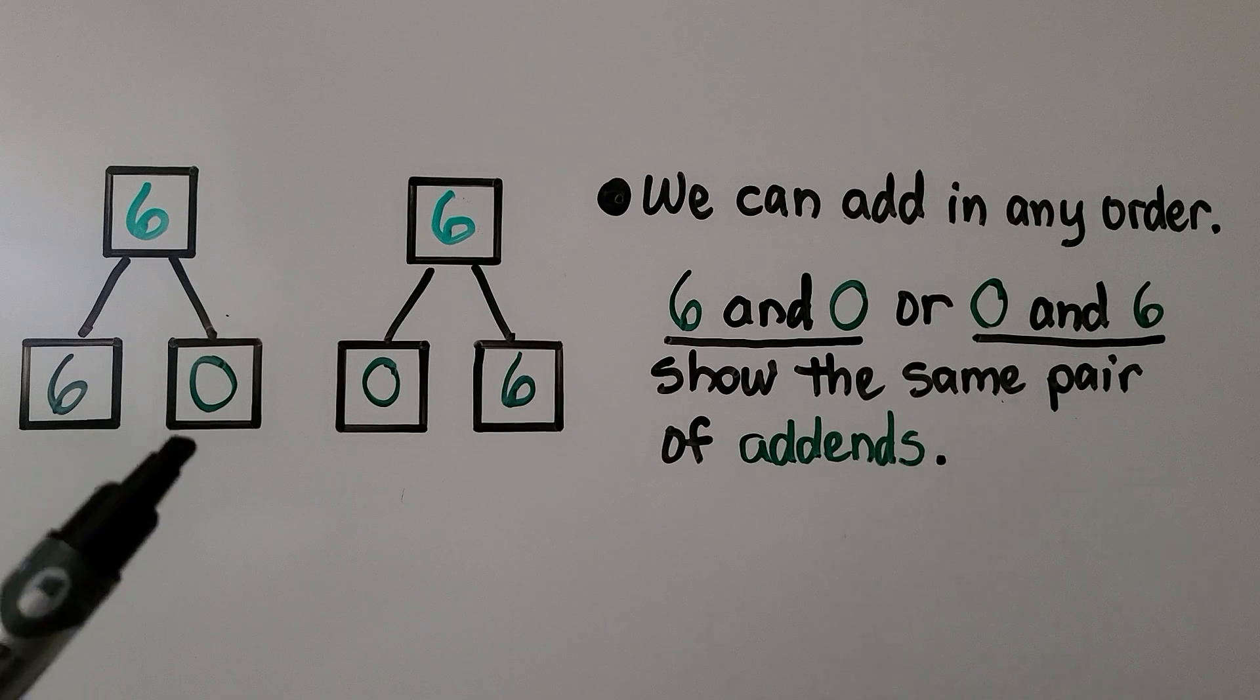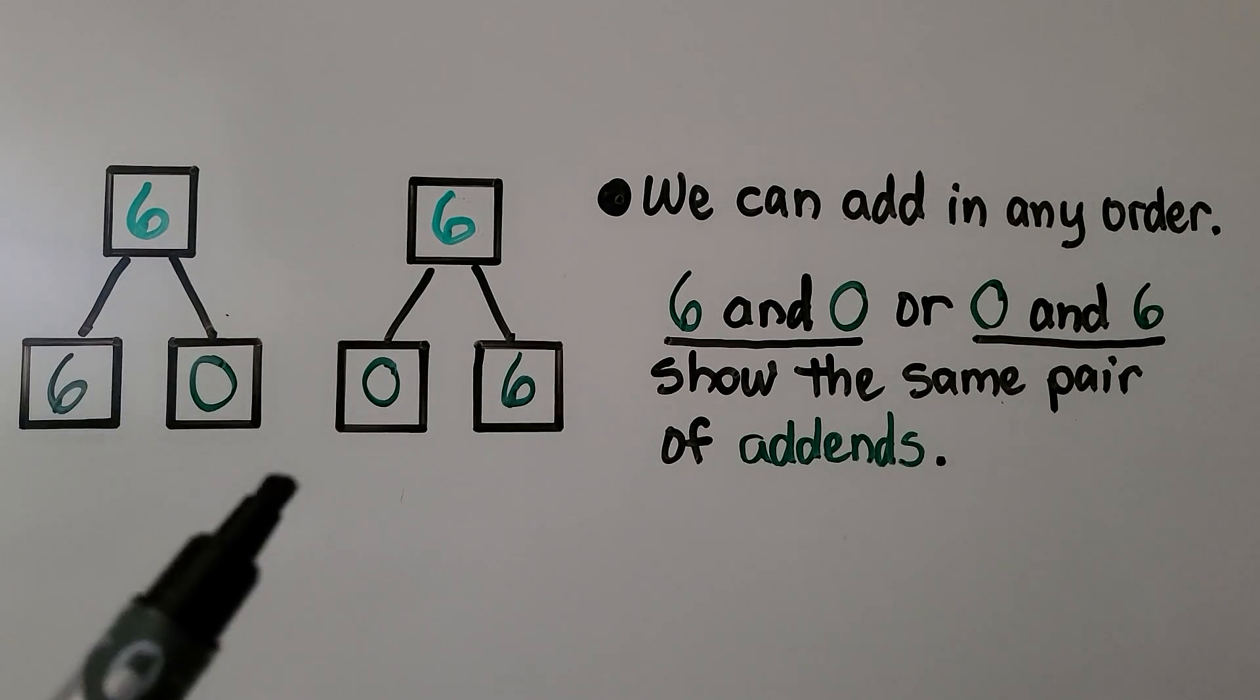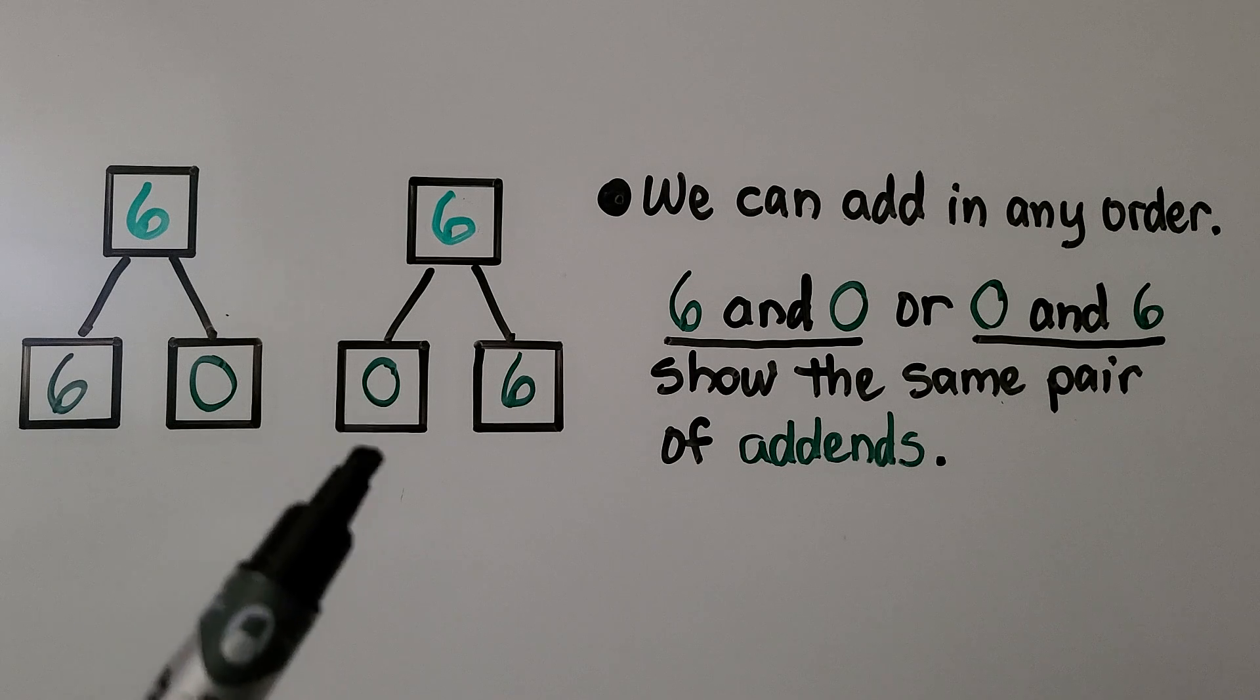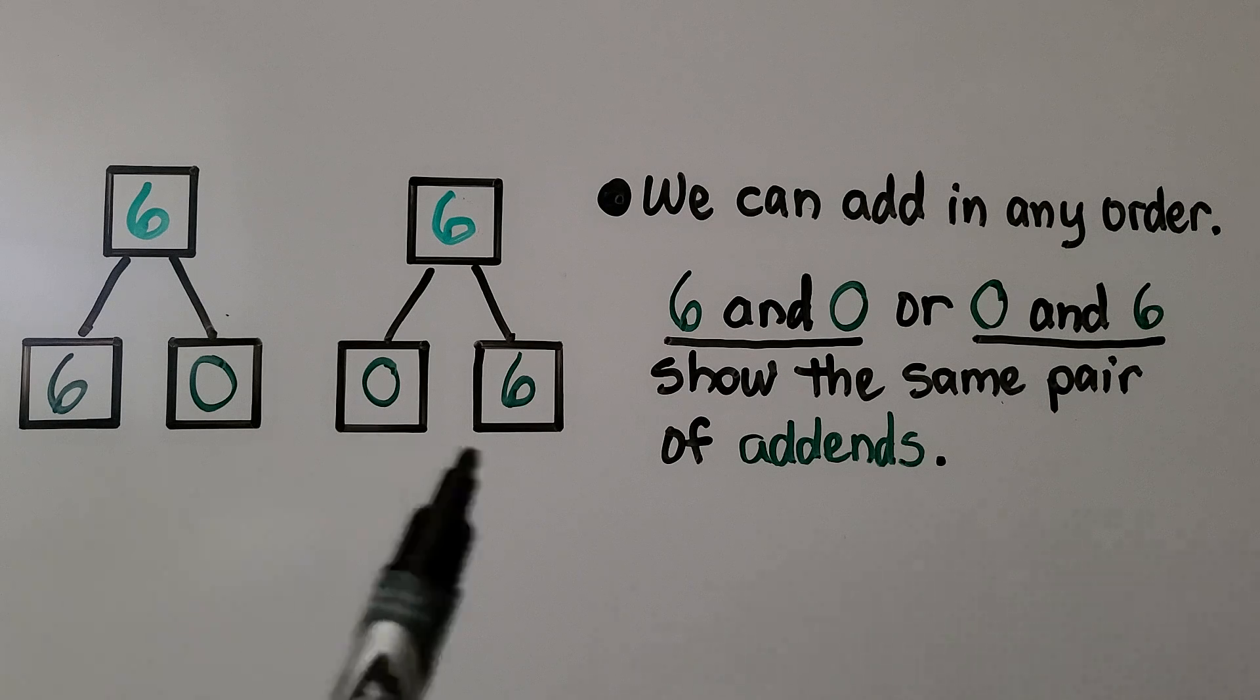We can use 0 as one of the addends. The addends for 6 could be 6 and 0. And if we reverse their order and do 0 and 6, they show the same pair of addends. We can add in any order, so it's the same pair.